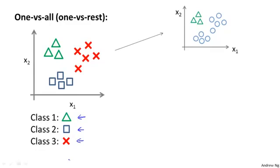We're going to create a new training set like that shown on the right, and we're going to fit a classifier, which I'm going to call h subscript theta superscript 1 of x, where here the triangles are the positive examples and the circles are the negative examples. So think of the triangles being assigned the value of 1, and the circles the value of 0.